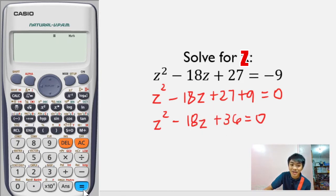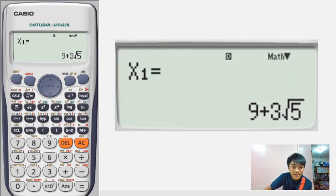After natin i-factor, we are going to equate the factors to zero and then solve for x. Yung nasolve na x values ay 1 at saka negative 9 over 4. But you know what? We can actually do this in the calculator. Siguro, tatlong pindot lang pwede nang isolve ni calculator ang solutions ng quadratic equation.